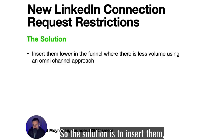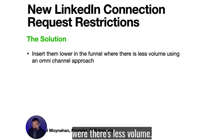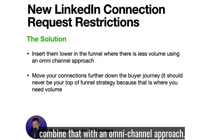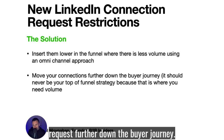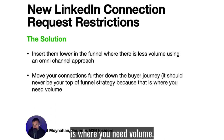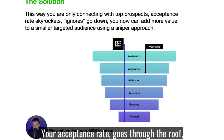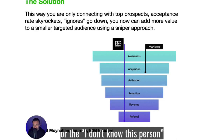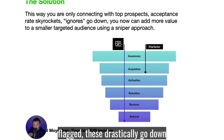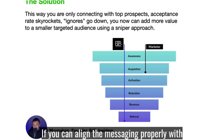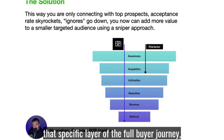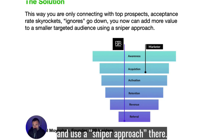The solution is to insert connection requests lower or deeper down the buyer journey where there's less volume, the targeted prospects are higher, and then combine that with an omni-channel approach. You're moving connection requests further down the buyer journey — it should never be your top-of-funnel strategy. You'll only connect with prospects who have already engaged with your content, your acceptance rate goes through the roof — 70 to 80% — and the 'I don't know this person' clicks that get your account flagged drastically go down. If the messaging is relevant and targeting is aligned with that specific layer of the full buyer journey, you'll add more value to a smaller, more targeted audience using a sniper approach.